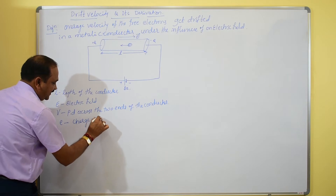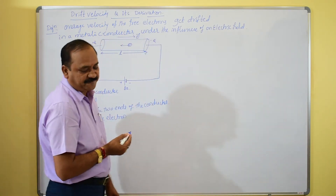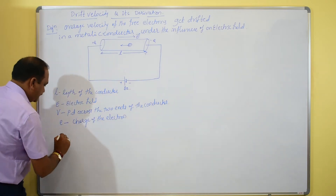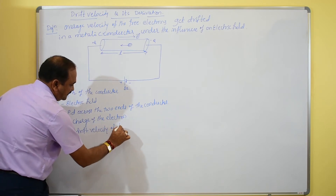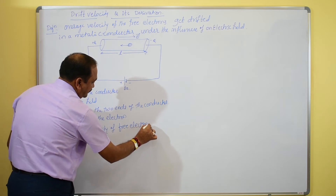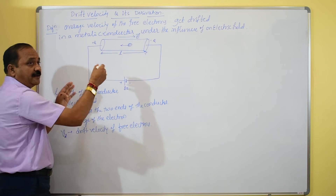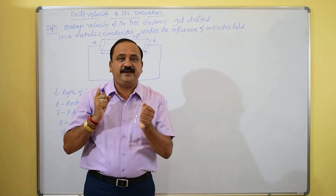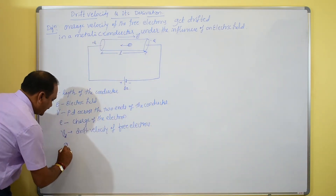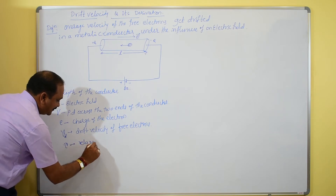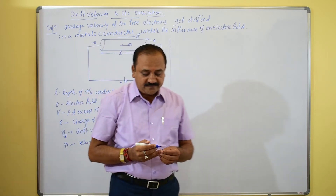Let e be the charge of the electron — we can also use q. Let Vd be the drift velocity of the free electrons. There must be successive collisions among the electrons; the gap between collisions is what we call relaxation time. Let tau (τ) be the relaxation time — that is what is actually meant by relaxation time.